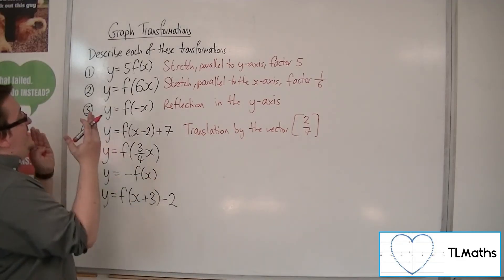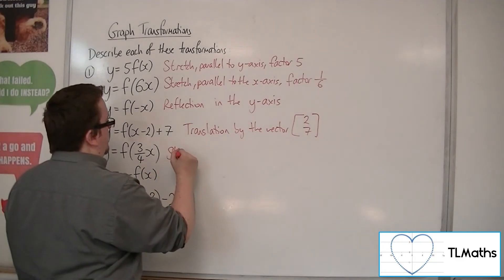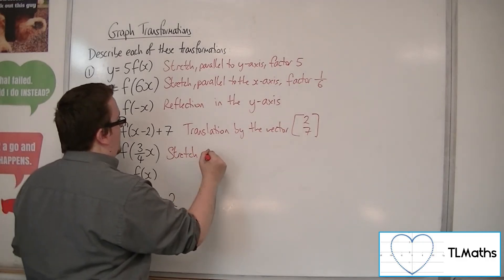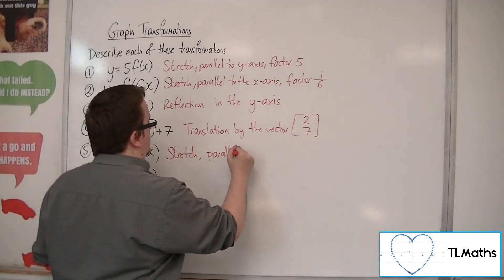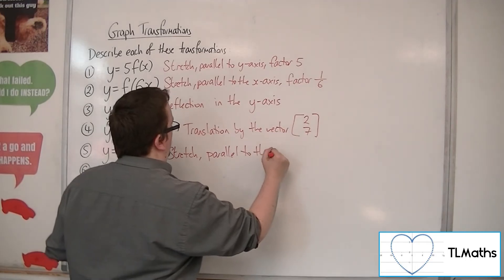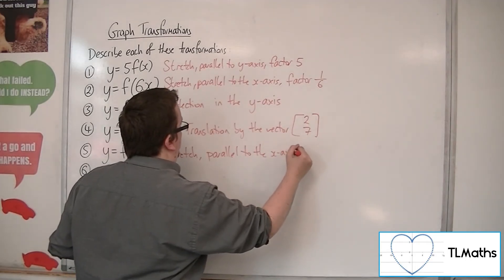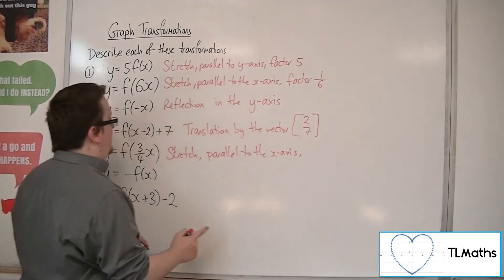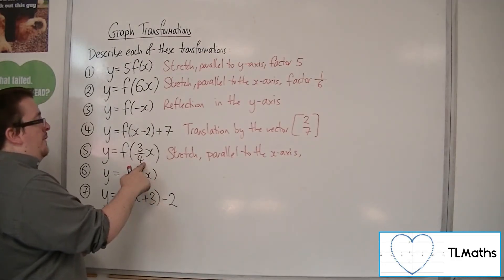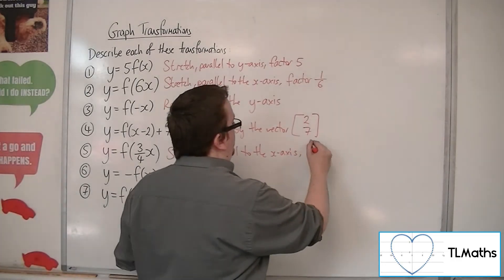Number five is a stretch. It's inside the bracket, so it's parallel to the x-axis. Because it is inside the bracket, it is the reciprocal factor, so it's 4 thirds.